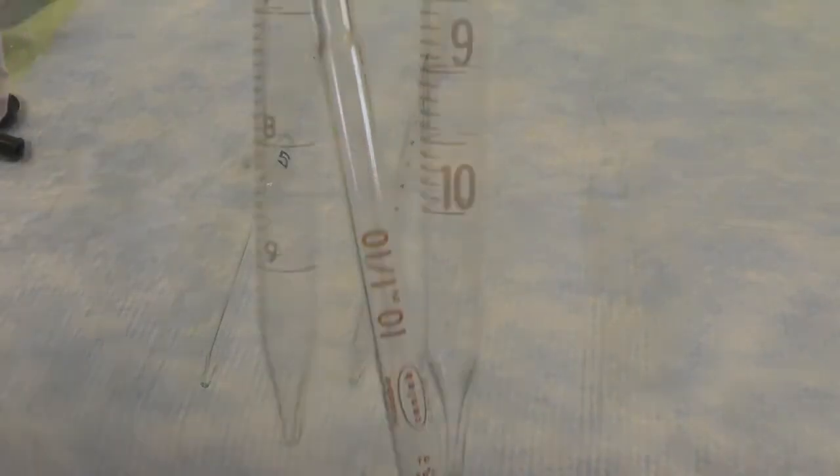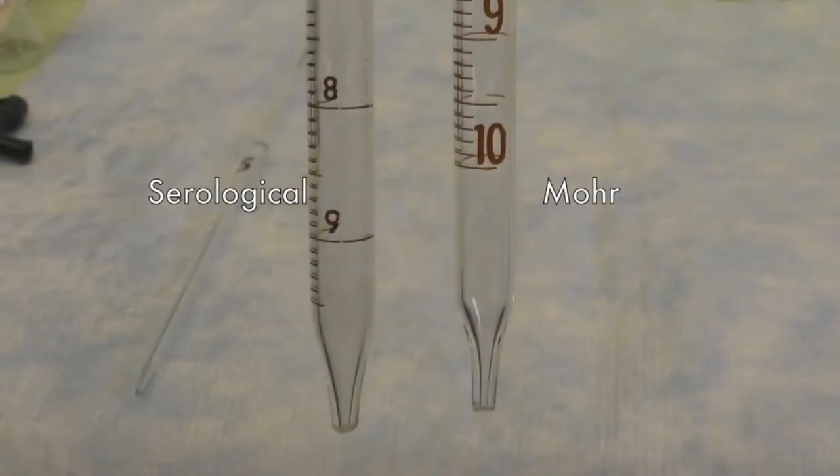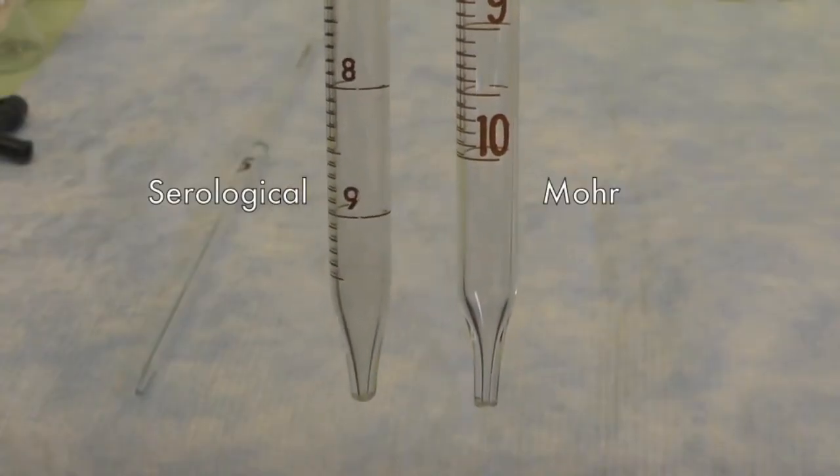Mohr pipette is very similar to serological pipette, but an obvious distinction is the position of the graduation marks. Serological pipette has graduation marks all the way to the end of the pipette, while Mohr pipette has a baseline mark, such as 10 milliliters.